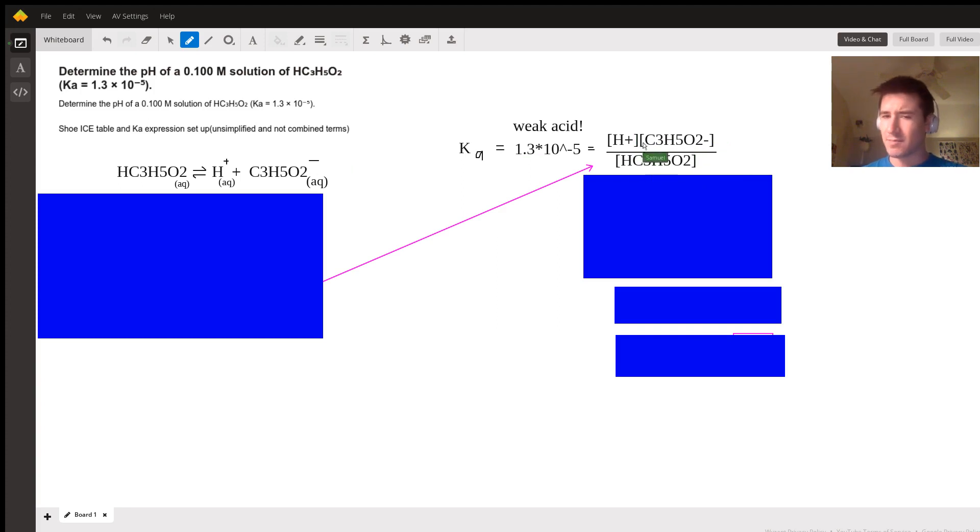So if this is a small value, like 10 to the negative fifth, it must mean that these values up top are really small relative to the numbers in the bottom, which means that very little of the products are being formed relative to the amount that we have initially, which means it's a weak acid. It's not dissociating very well in water.